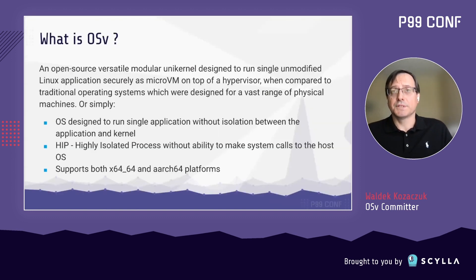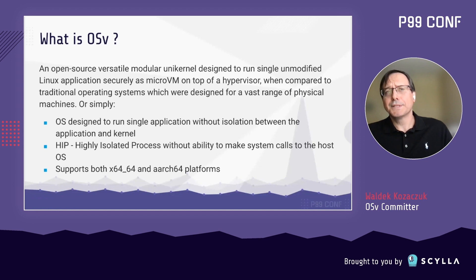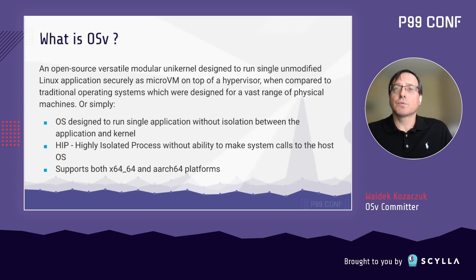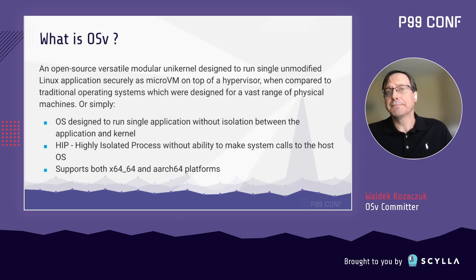OSV is a unique kernel designed to run a single, unmodified Linux application on top of a hypervisor, whereas traditional operating systems were originally designed to run on a vast range of physical machines. Simply speaking, OSV is an OS designed to run a single application without isolation between application and kernel, or it can be thought of as a way to run highly isolated processes without the ability to make system calls to the host OS. OSV can run on both 64-bit x86 and ARM architectures.